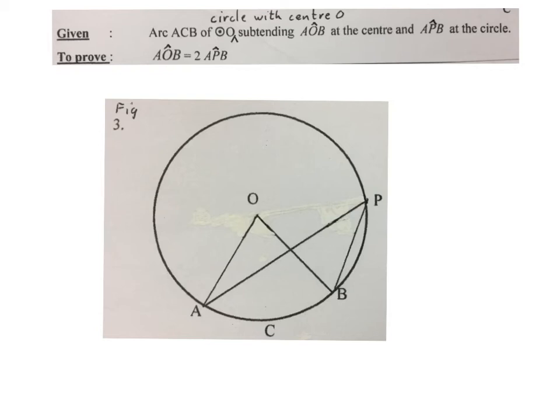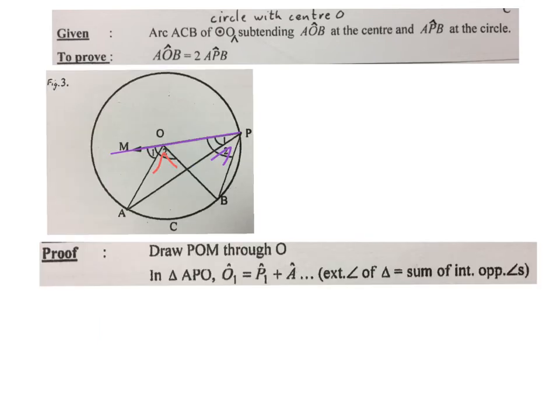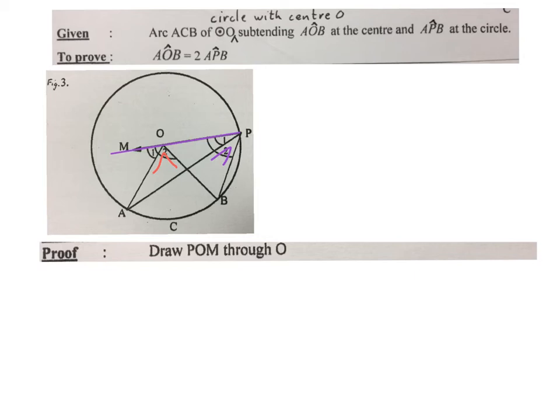If they ask you to prove that AOB, the angle over here, is 2 times the angle here at P, you just have to find out where to draw the line. It's exactly the same as the previous one. The proof says, draw POM, so from P through O to M. We have to prove that the AOB is equal to 2 times the APB, the red one, is twice as big as the purple one.